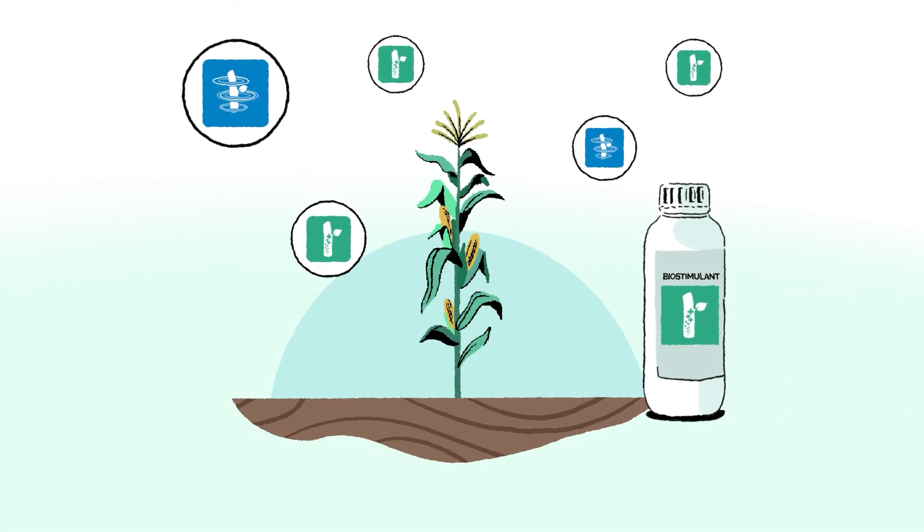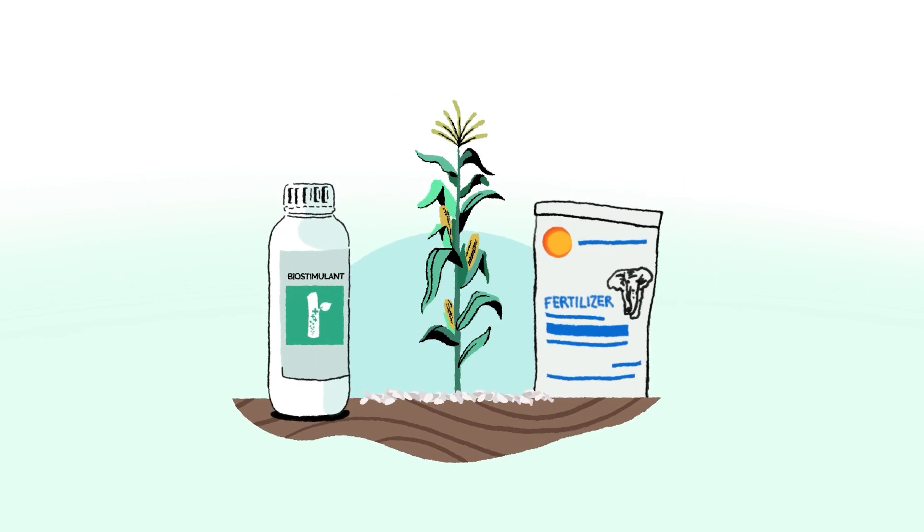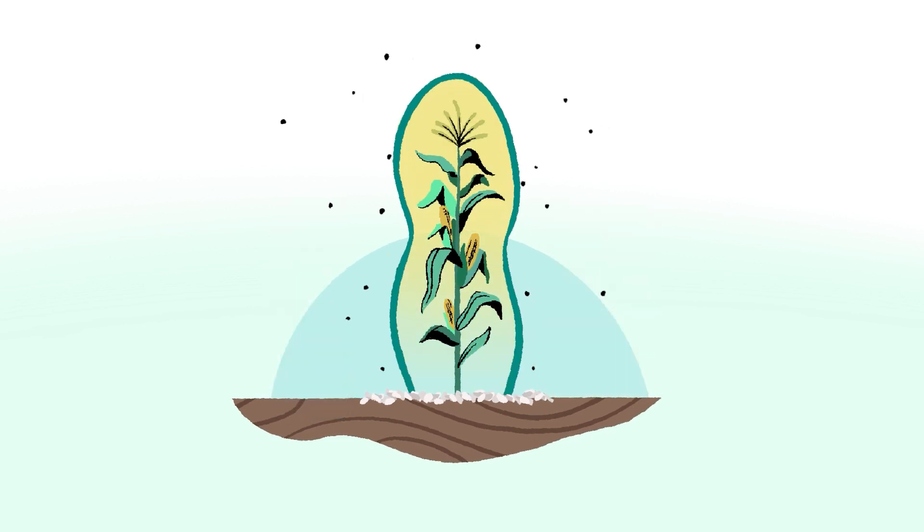On the other hand, avoiding stress for the plant makes it less vulnerable to pest attacks. Thus, fertilization as well as biostimulants are levers to support the healthy growth of the plant. This further contributes to the integrated pest management program.